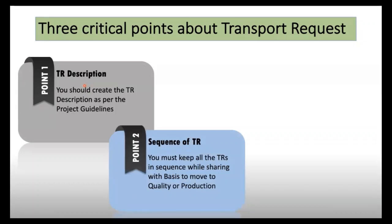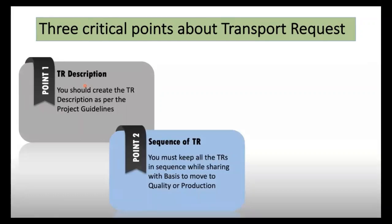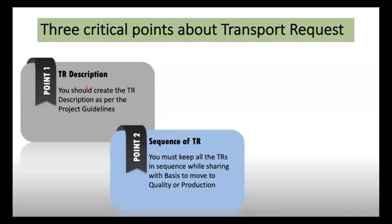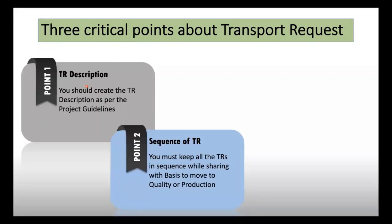The second point is the sequence of TRs. The sequence is very important when you are sharing TRs to the basis team — you have to provide all TRs in order. If you jumble them or give TR 4 as the second and TR 3 later, your configuration may go wrong. For example, if in TR 3 you activated negative quantity for a plant and movement type combination, but TR 4 deleted it, and you moved TR 4 first, the negative activation will still remain in the end.